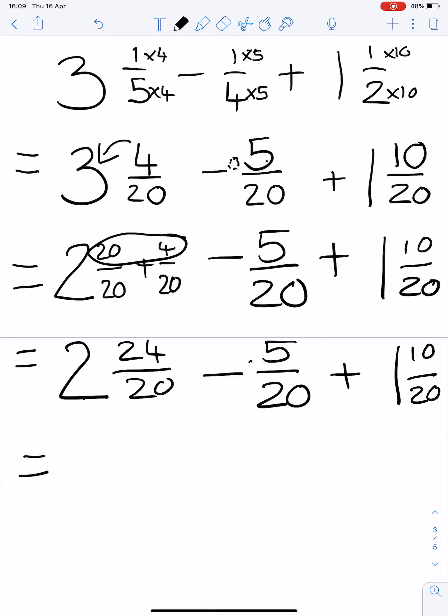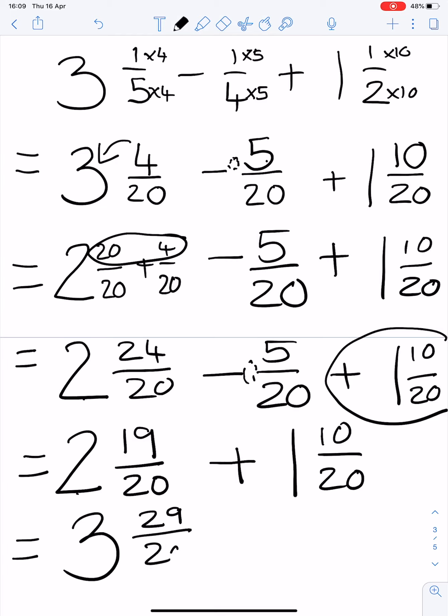2 minus nothing is 2. 24 minus 5 is 19 over 20. And now I need to repeat this again, plus 1 and 10/20.